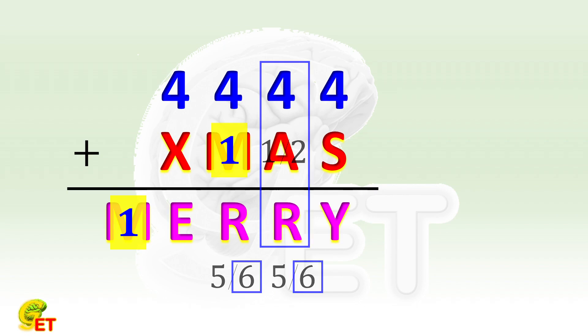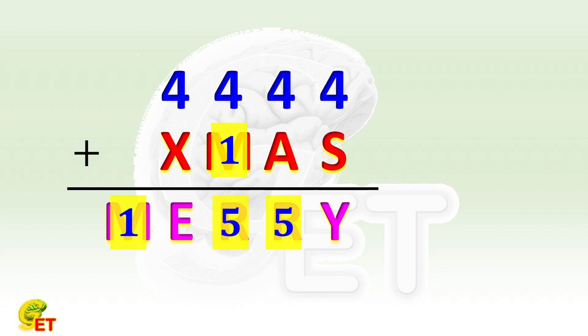So R can only be 5. The ones digit of the result of 4 plus A is 5, so A can only be 0 or 1. But M is already 1, so A can only be 0.